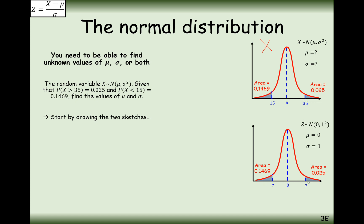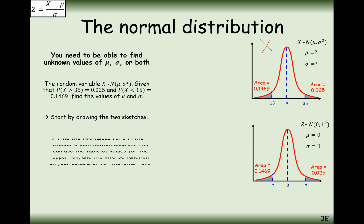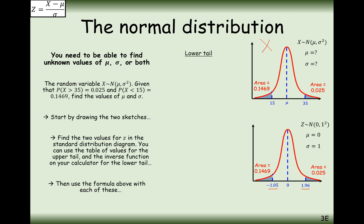From some point on the standard normal, the area above it is 0.025. Using the formula booklet, that value is 1.96. The area below the other marker is 0.1469. Using the calculator inverse normal mode, that value is minus 1.05.